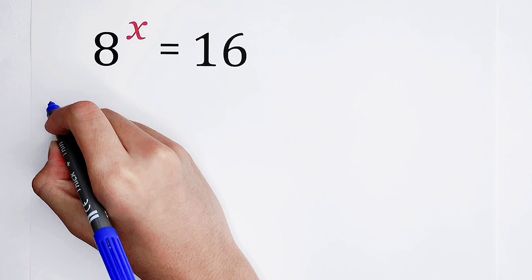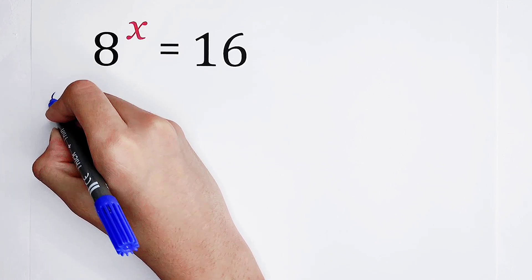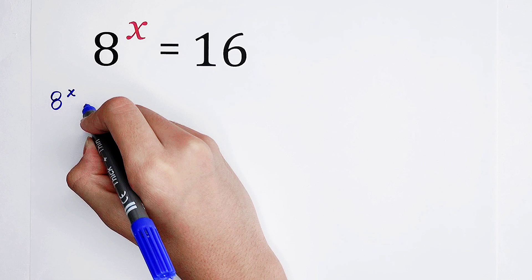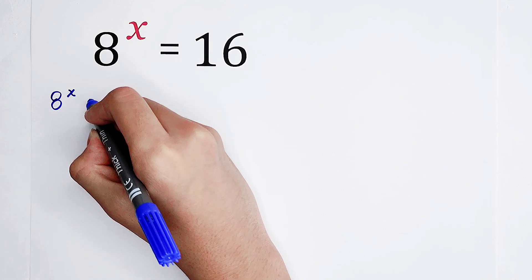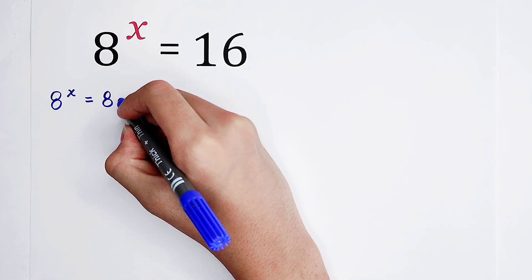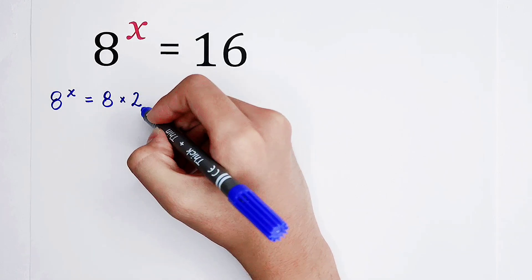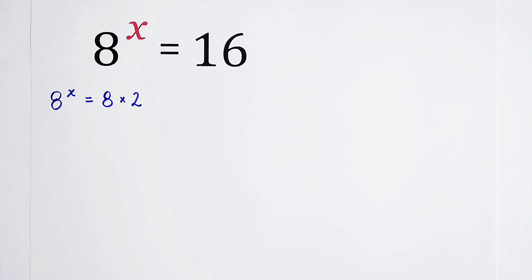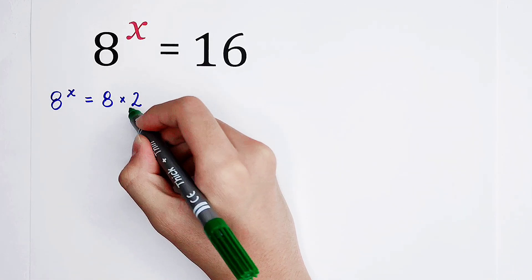Then, this equation will turn to this form. 8 to the power of x is equal to 8 times 2. Then, this 2 is in the way.